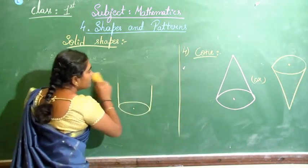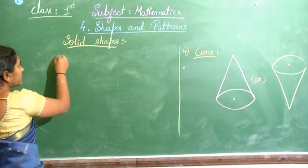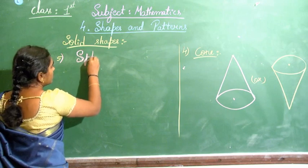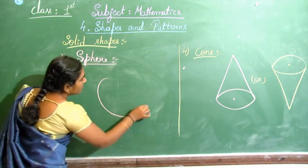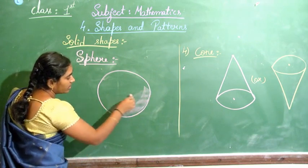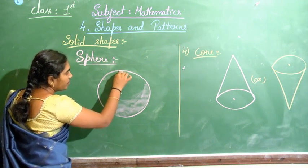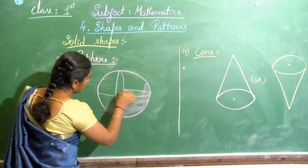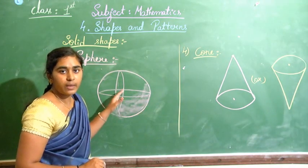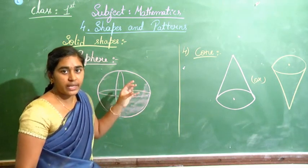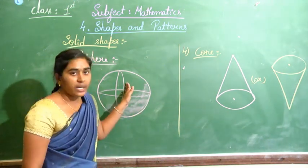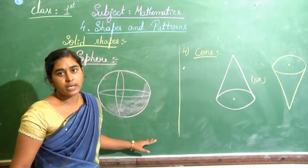The last solid shape is the sphere. A sphere looks similar to a circle when drawn, but you give some shade on one side. It is different from a circle — a circle is just a flat piece of paper in a round shape, but a sphere is like your ball. It has volume and takes up space when you hold it.